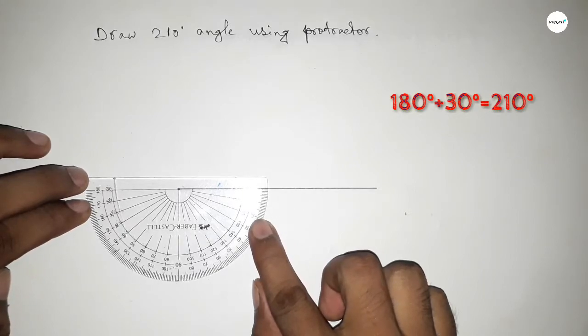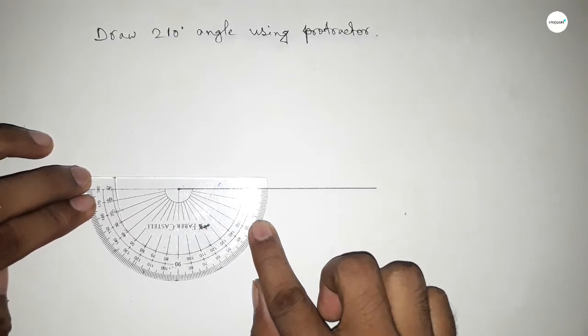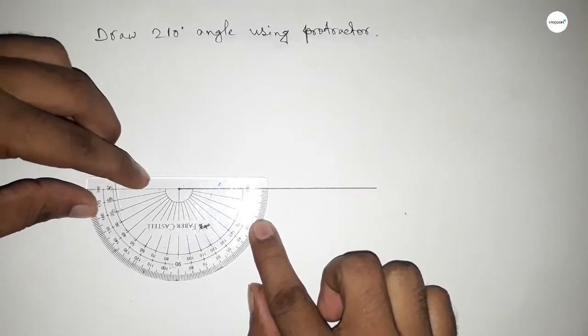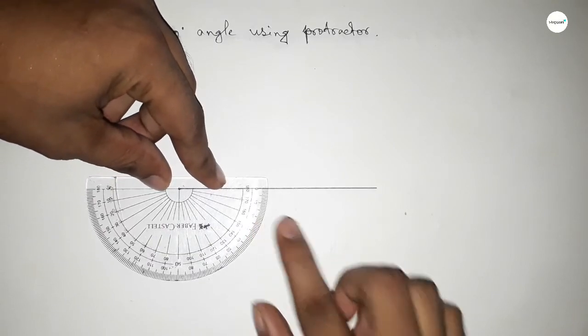So if you add 30 degree angle with 180 degrees, then we can get 210 degree angle. Okay, so putting the protractor by this way on this line.